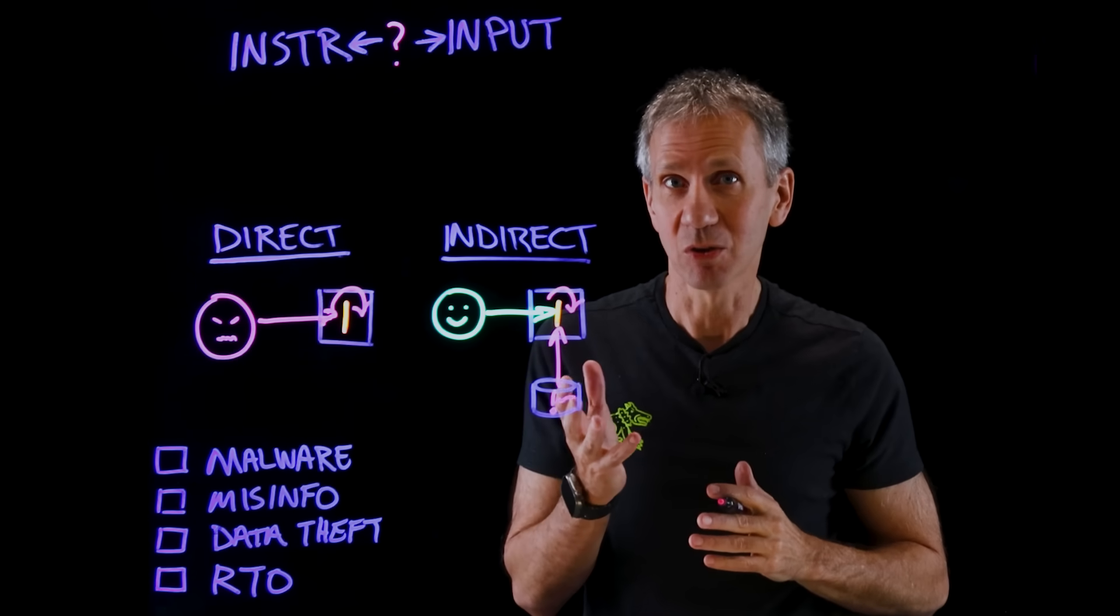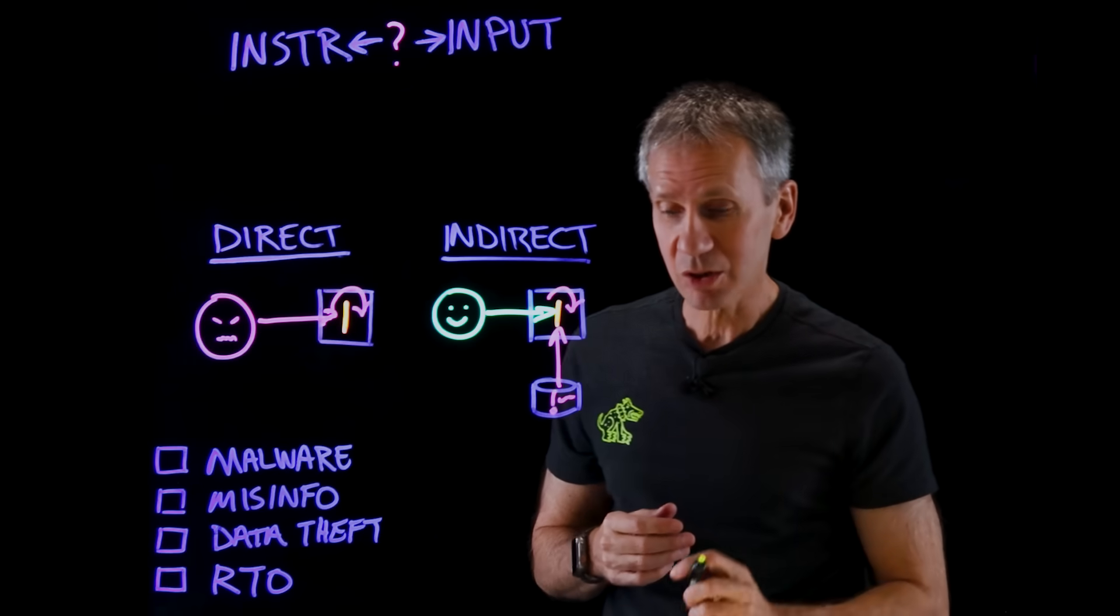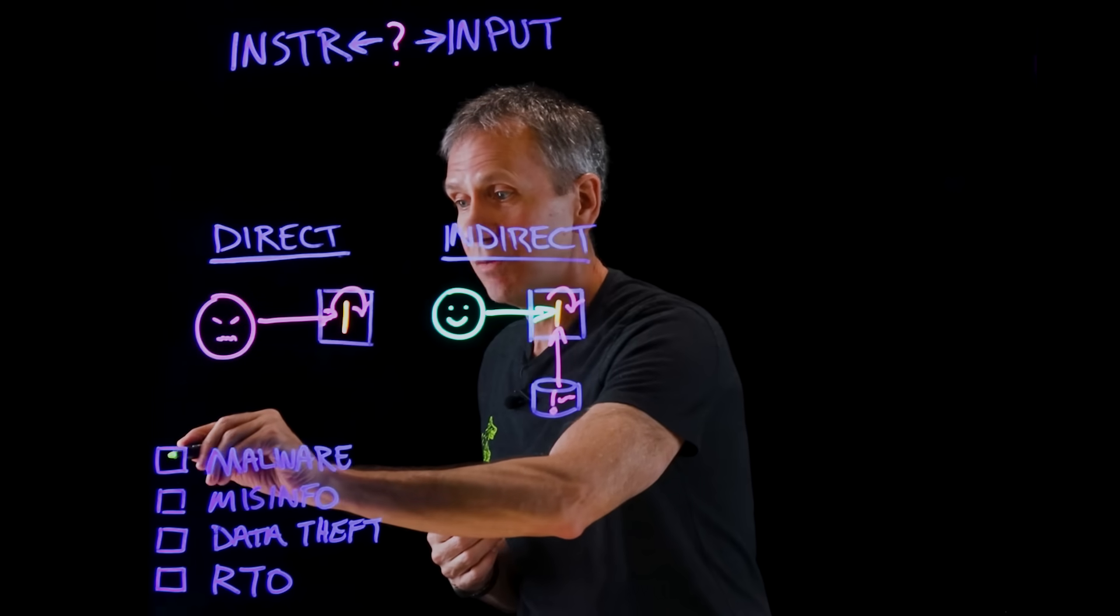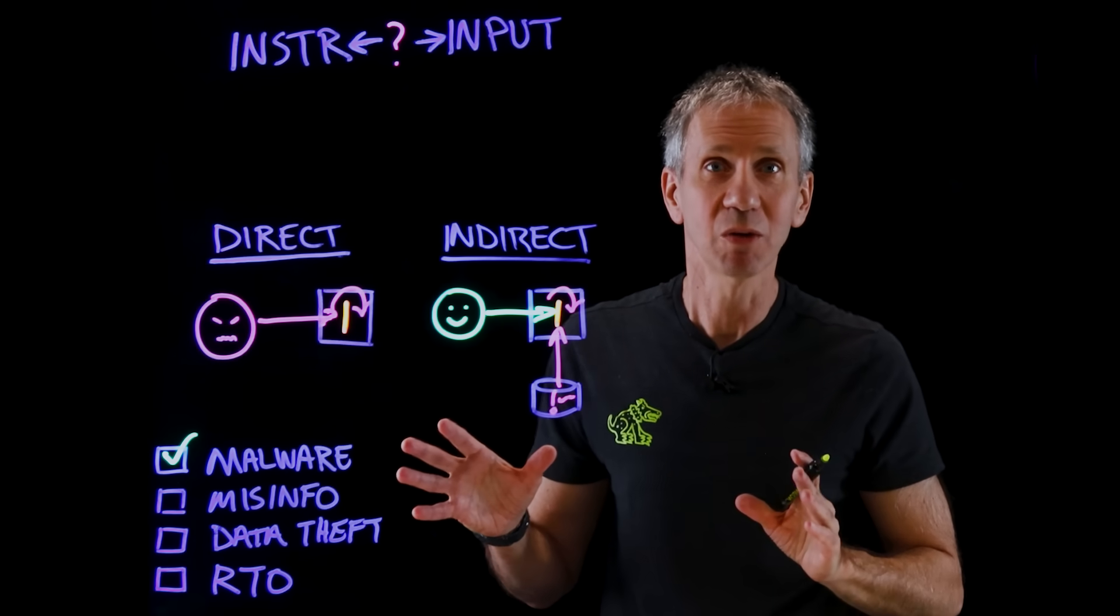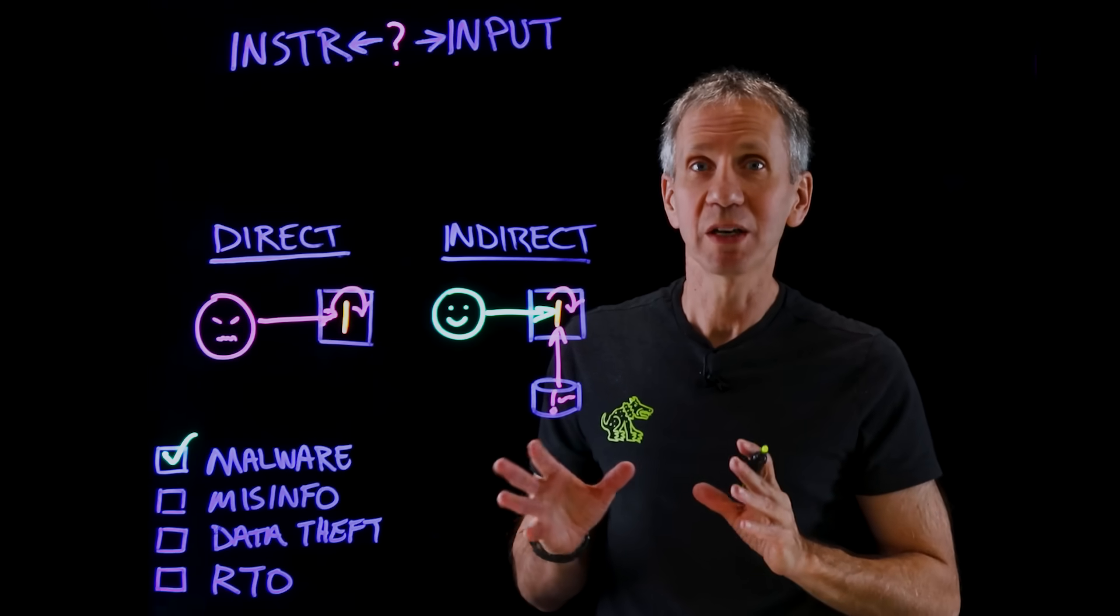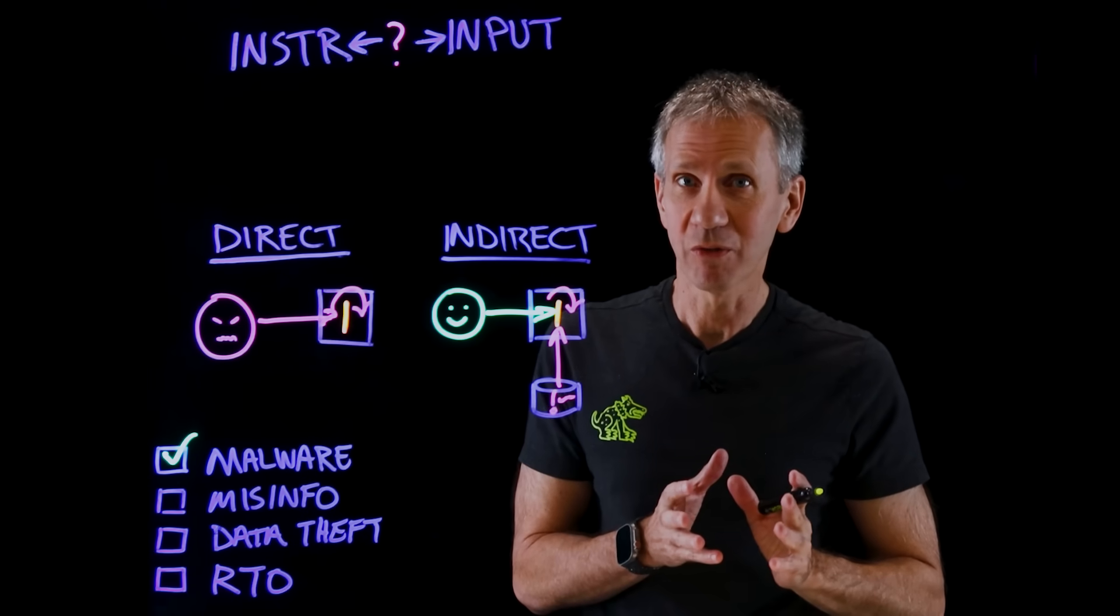Now, what could be the consequences if this, in fact, happens? Well, it turns out a number of different things. I gave you an example where we might be able to get the system to write malware, and we don't really want it to be doing that. It might be the system generates malware that you didn't ask for in the first place.